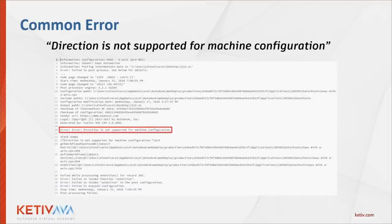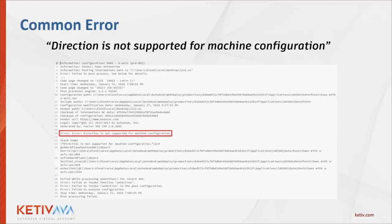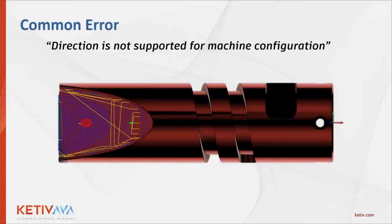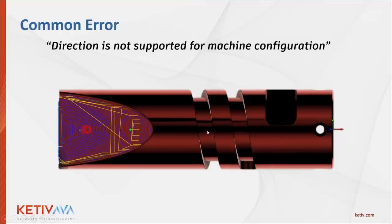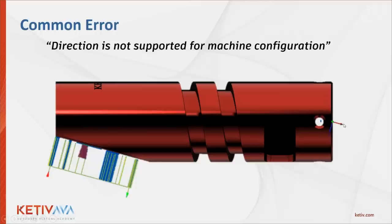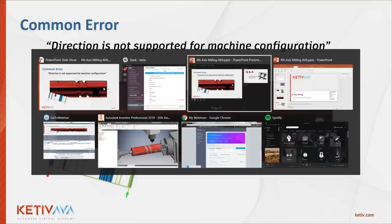A common error is 'direction is not supported for machine configuration.' Looking at the diagram, the setup appears straightforward — the X-axis seems to run directly through the center of the part. But when you rotate the view, you see the X-axis switched and is running parallel to the selected face. If you have weird angles on your part, make sure you have a plane coplanar to either the XY or XZ plane, depending on your machining angle.